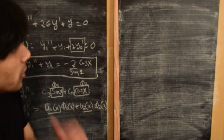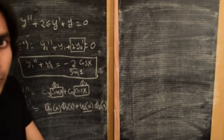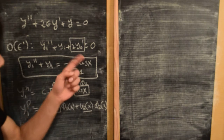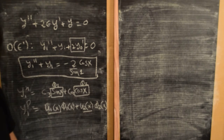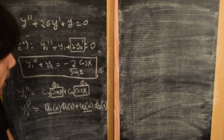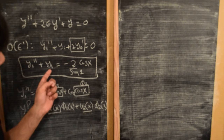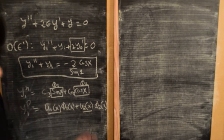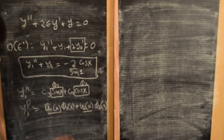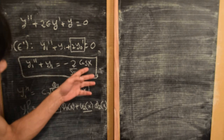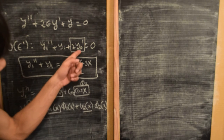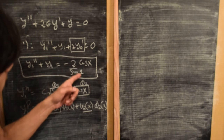Welcome back. In the previous part of this video, we solved for the zeroth order solution y₀(x) and then we were solving for the first order term y₁. We found this second order linear differential equation subject to a forcing which basically comes from the zeroth order solution y₀.